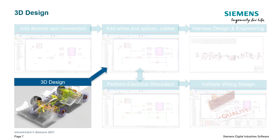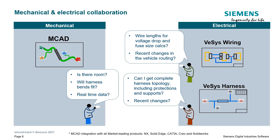Now, let's look at 3D design. Questions that the electrical and mechanical designers may have spent weeks discussing can now be answered in minutes with the seamless integration between mechanical and electrical designs. For example: will the wiring fit in the vehicle? Are the harness bends created to fit in the vehicle possible in harness manufacturing? How can I get the real-time data? And on the electrical side, can I get the wire lengths to allow for voltage drop calculations and fuse size calculations? How can I get the recent wire changes due to changes in vehicle routing? Can I automatically get the complete harness topology, including the protections and supports? And how can I understand what recent changes have been made?